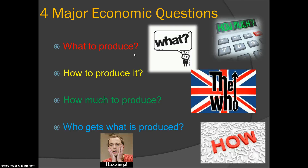So what to produce: a teleportation device. Second question: how to produce it? Are we going to produce them all by hand or create a factory? What process are we going to use, and what resources will it take? Think of it like needing plutonium to run a flux capacitor in a DeLorean — what resources are going to be required to produce it? That all falls under 'how.'